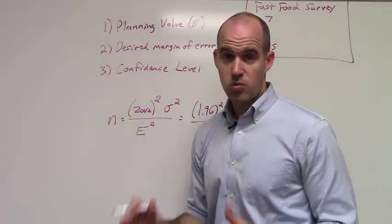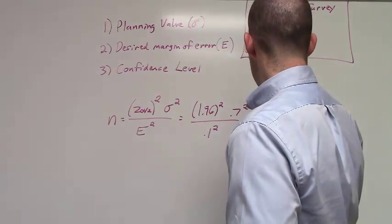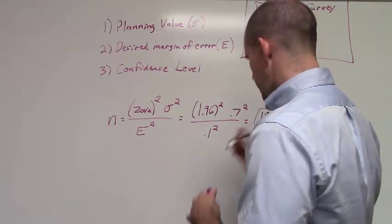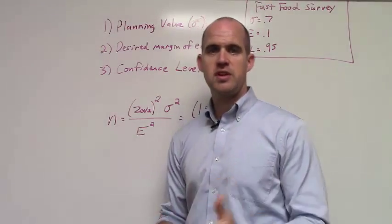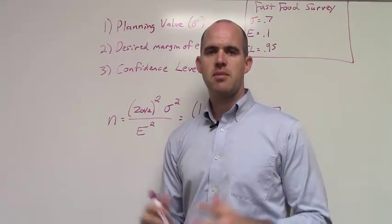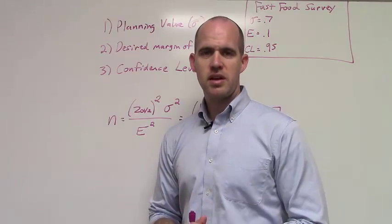And if you do this and round up, you'll find you get a value of 188. So if you're a researcher and you're going back to that fast food company, you'd say the magic number is 188.